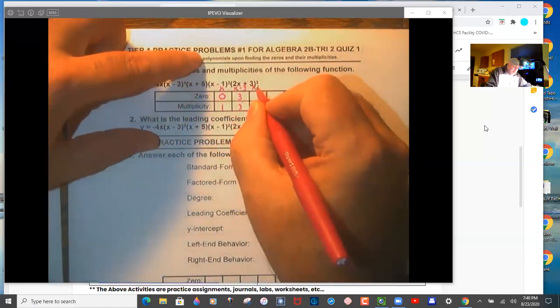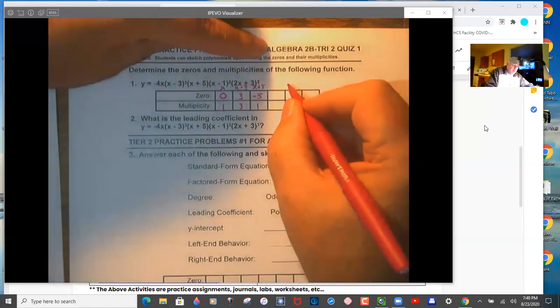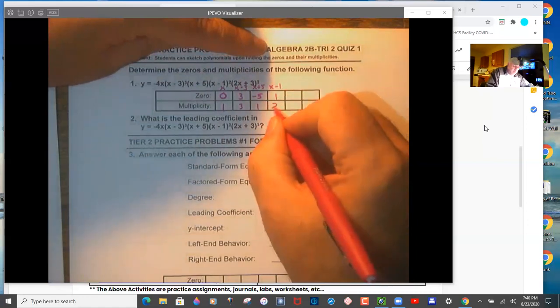Then we have x plus five, its zero is negative five, multiplicity one. Then we have x minus one, its zero is one, multiplicity two.